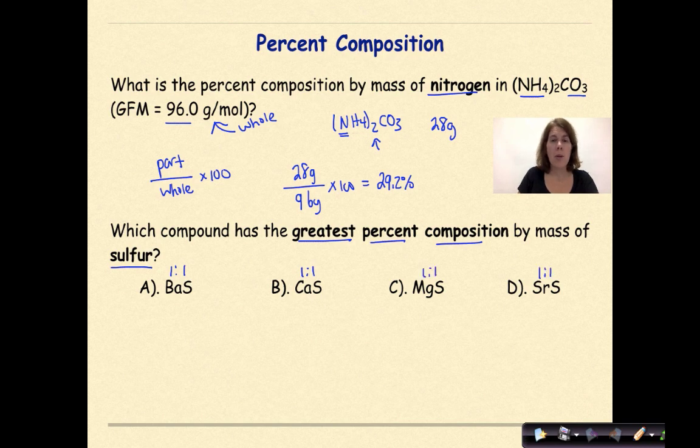The next thing I would do is sort of tease out what is the mass of each element that's combining with the single sulfur. So the atomic mass of barium is 137, while sulfur is 32. For calcium, that is 40. Well, again, we'll just put sulfur is 32. Magnesium is 24. And sulfur is 32. And strontium is 88. Well, again, sulfur is 32.